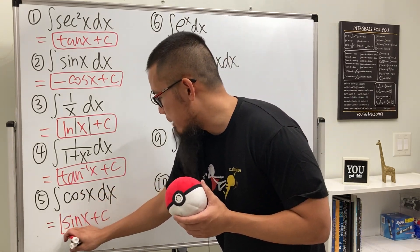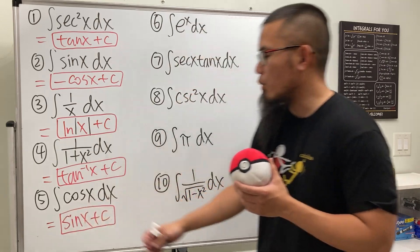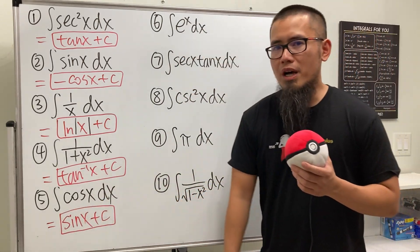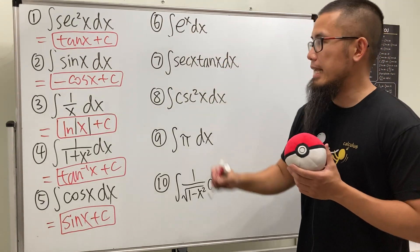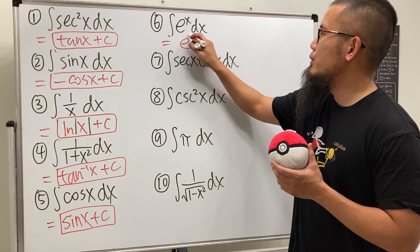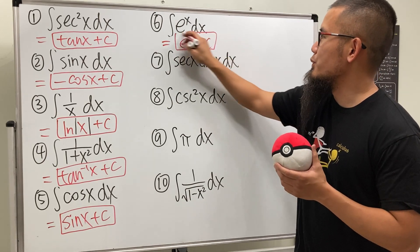Number six, the hardest one. E to the x function will give us e to the x. The answer is e to the x. Man, that was the hardest one.